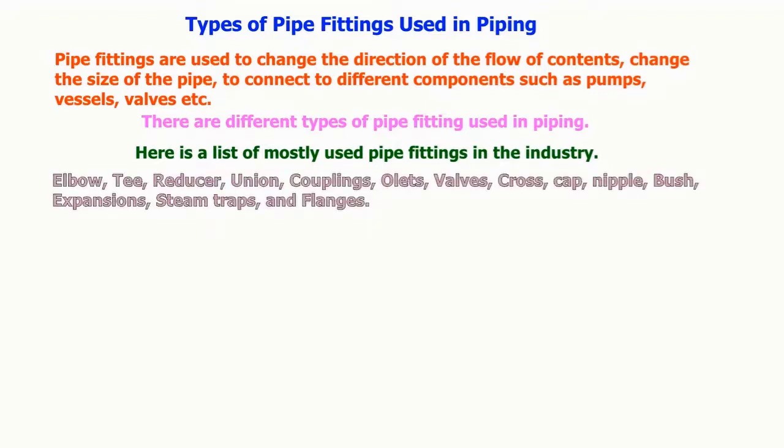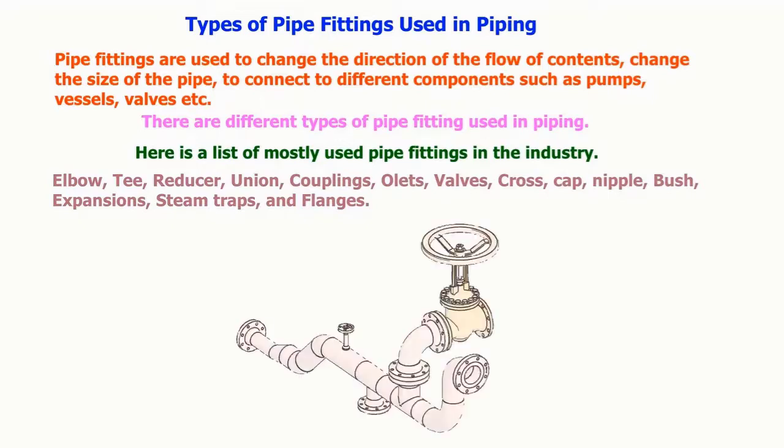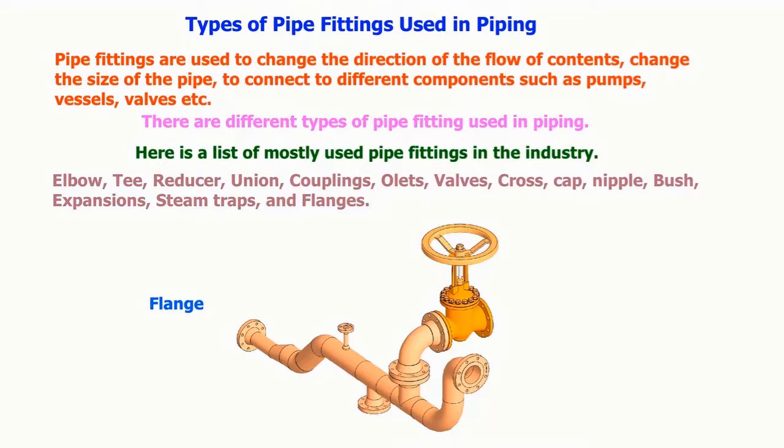Here is a list of mostly used pipe fittings in the industry: elbow, T, reducer, union, couplings, bullets, valves, cross, cap, nipple, bush, expansions, steam traps, and flanges.